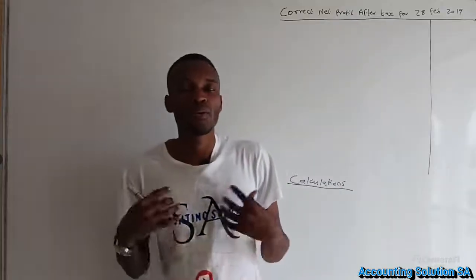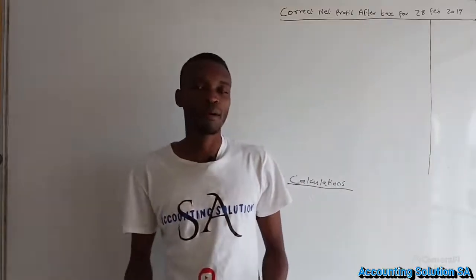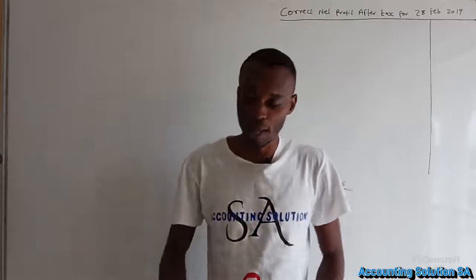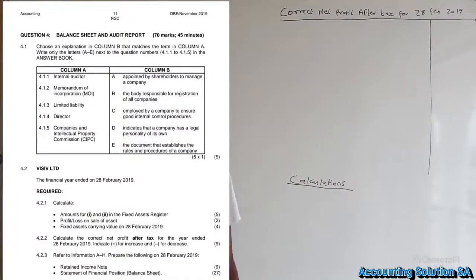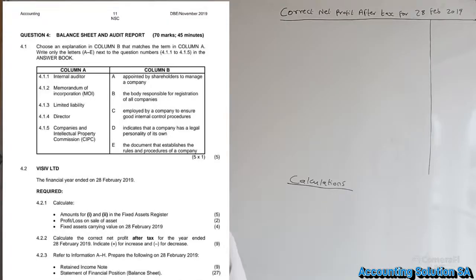Hi Grade 12. In this video we are going to do a question that falls under correct net profit after tax. This is the question paper that was written in November 2019, that was a final examination. So without wasting any time, let's go and check the question. This is question 4.2.2 — calculate the correct net profit after tax for the year ended 28 February 2019. Indicate plus for increase and minus for decrease.